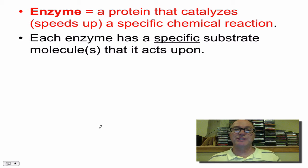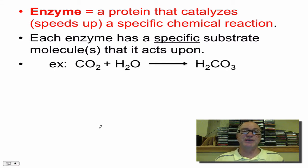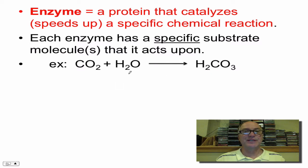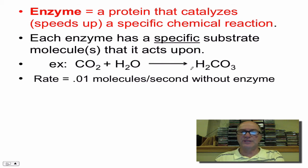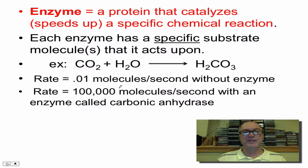Now each enzyme has a specific substrate that it acts upon, so we call enzymes specific to their substrate. Here's an example: carbon dioxide is a waste product of our cells, and it has to get into your bloodstream to get out through your lungs. When it does, it reacts with water to make carbonic acid, H2CO3. Without an enzyme, the rate is about 0.01 molecules per second — it takes about 100 seconds for one CO2 to react with one water. But with the enzyme carbonic anhydrase, you can get 100,000 molecules of carbon dioxide reacting every second.